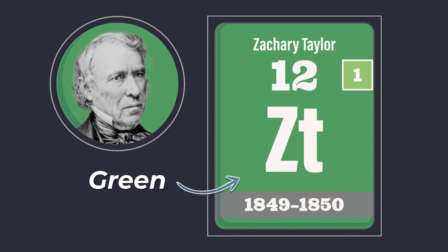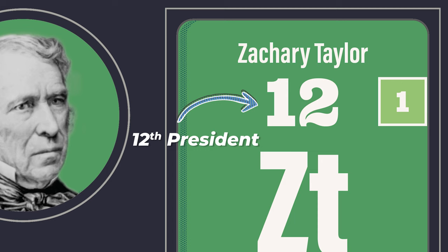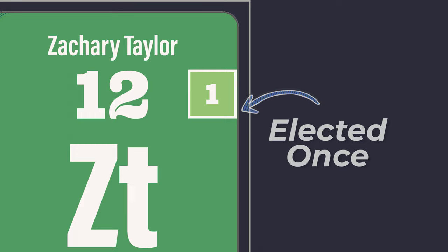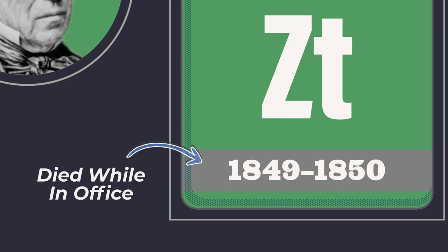Taking a look at the periodic cell of Zachary Taylor, you can see that it's green, showing that he was a member of the Whig Party. The 12th in the top center of the cell indicates that he was the 12th president, and the 1 in the top right shows that he was elected to one term. The years he was in office are displayed at the bottom of the cell, and a gray stripe running through the bottom of the cell indicates that he died while in office.